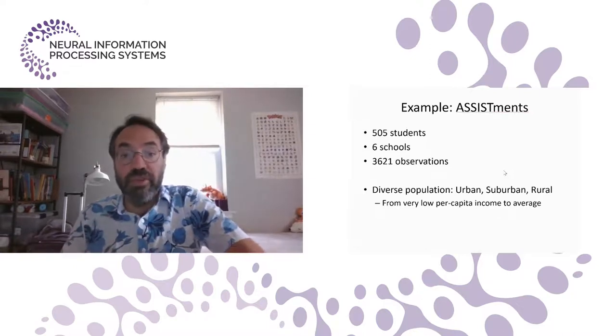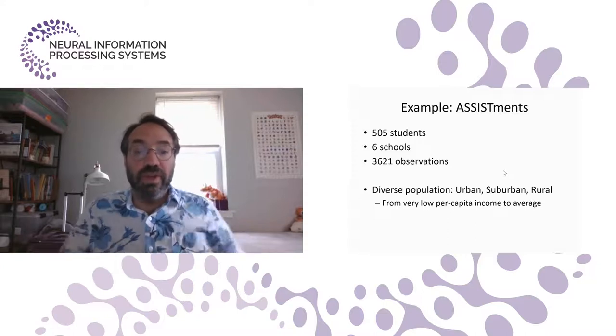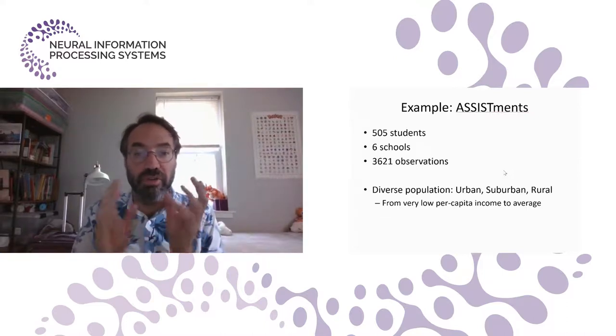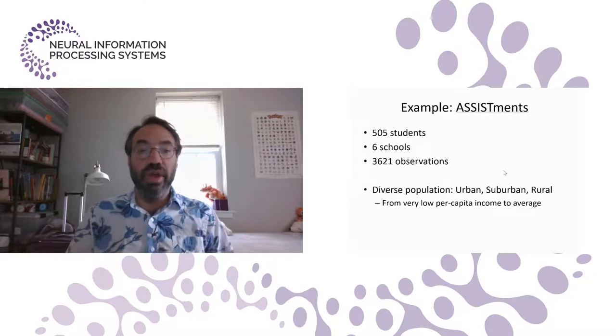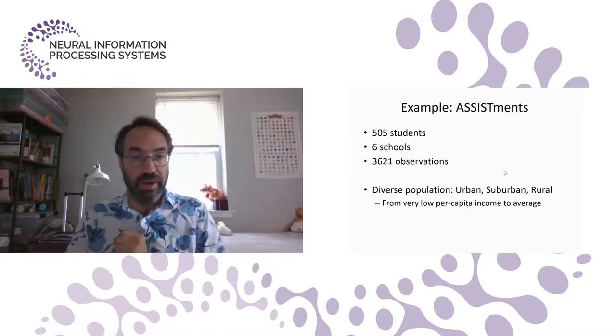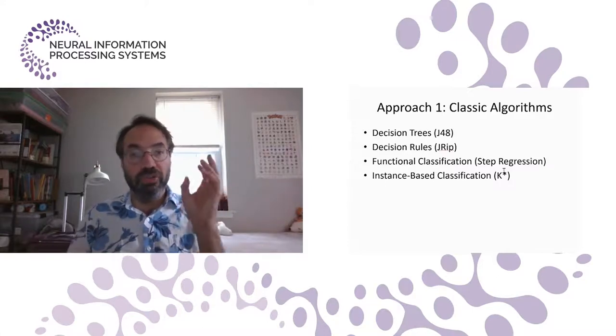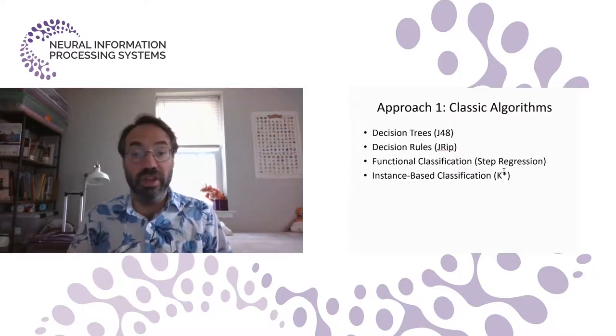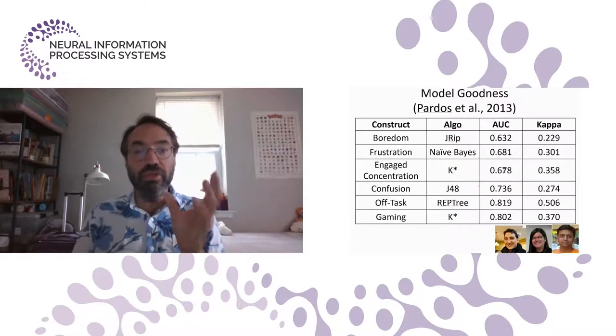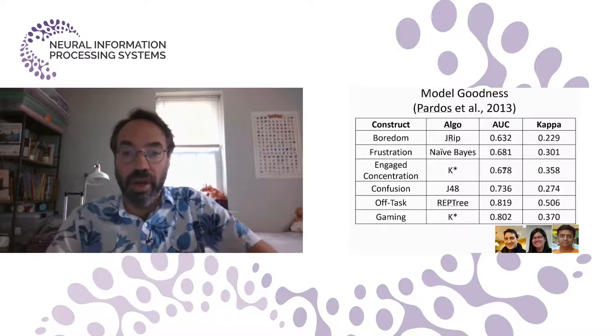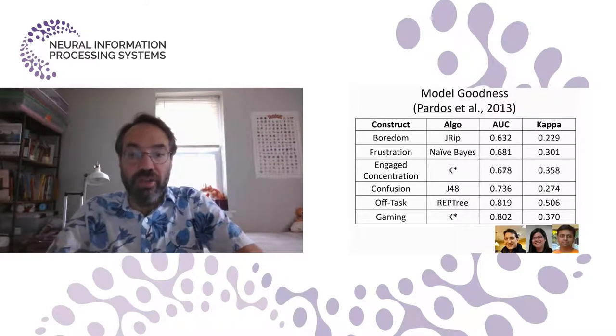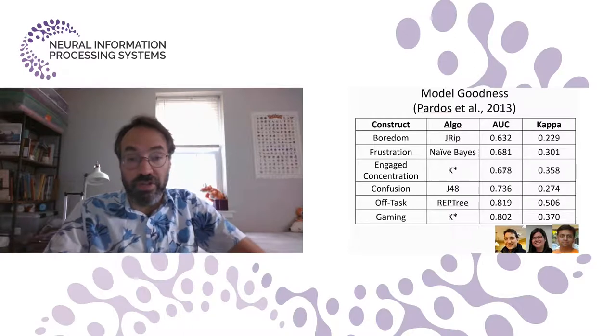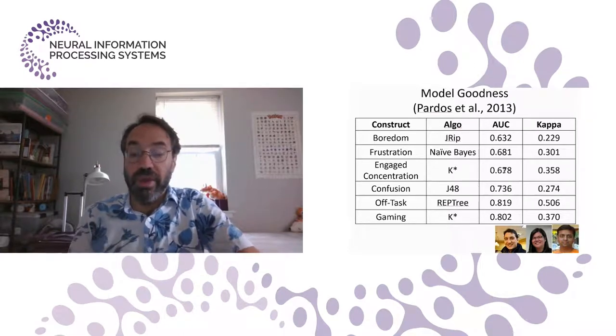I'll give a quick example from the Assistments platform, where we observed over 500 students in six schools making over 3,600 observations. Across these six schools, we collected a diverse population of urban, suburban, and rural students who ranged from very low per capita income to average per capita. So in our first approach to modeling in this dataset, we used classic algorithms like decision trees, decision rules, instance-based classification, functional classification. Our models varied in quality, so our worst-performing model was boredom, with a rather mediocre AUCROC of 0.63. When looking at affect, we got up to an AUCROC of 0.736 for confusion. And then off-task behavior in gaming the system, we got up a little bit over 0.8.